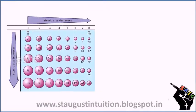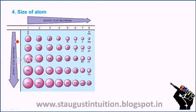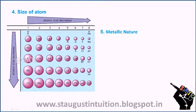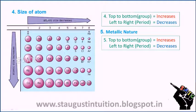Regarding atomic size: as we go down the group, the size of the atom increases because we are adding more shells. Due to the screening effect, moving from left to right across the period, the size decreases. Atomic size increases top to bottom in a group and decreases left to right across a period.